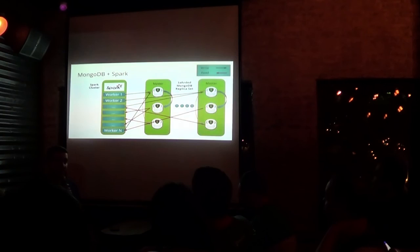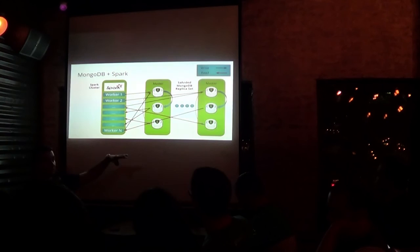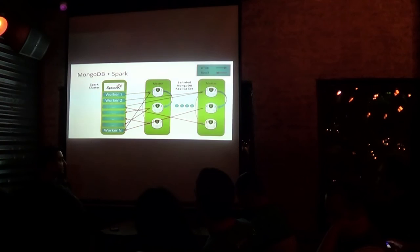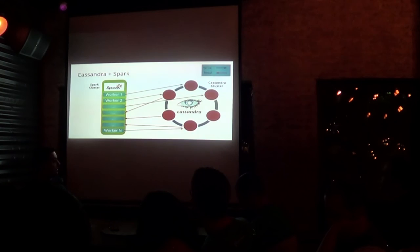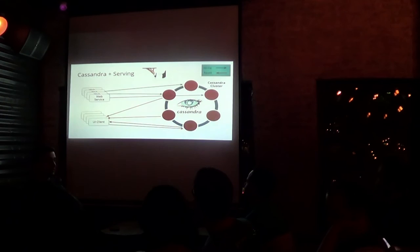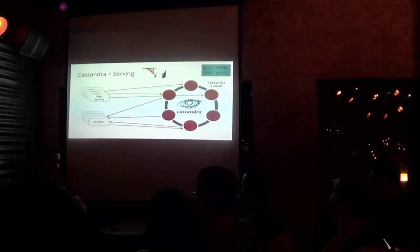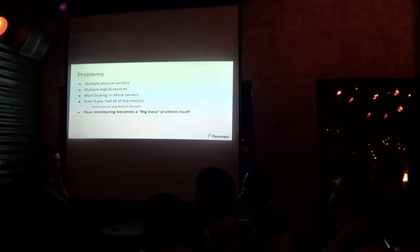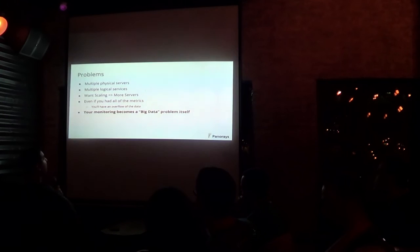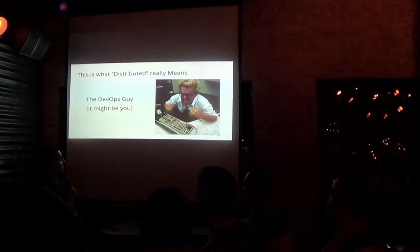This introduces a lot of problems. If we have MongoDB in combination with Spark, we have multiple servers — can be hundreds — talking to a sharded Mongo with a master-slave replication strategy, which means lots and lots of servers. If we go to another distributed solution like Spark working on top of Cassandra — again, lots of servers talking to lots of servers. We use Cassandra because we need indices to give data to UI clients and web services with pinpointed lookups. This introduces multiple physical servers, multiple logical services, and scaling means more servers. Even if you hand metrics over all of the data, you will be overflowing with data, and the monitoring system becomes a big data problem itself.